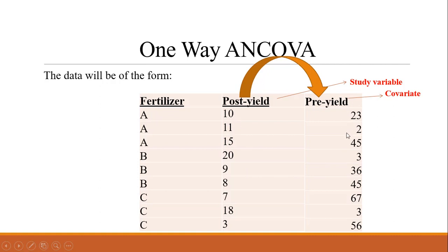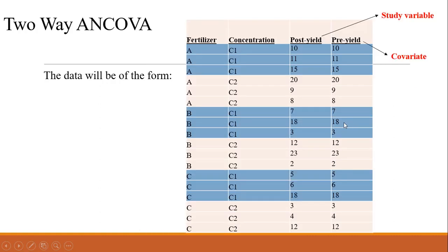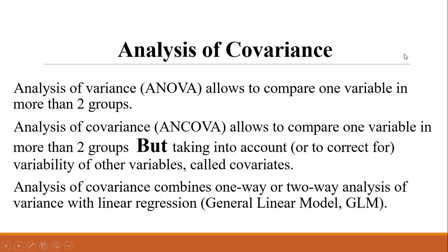For one-way ANCOVA, we again have one factor column plus two additional columns: one for the study variable and one for the covariate. In two-way ANCOVA, there are two factor columns plus columns for the study variable and covariate. Analysis of covariance allows comparison of one variable across more than two groups while correcting for variability in another variable called the covariate. ANCOVA combines one-way or two-way ANOVA with linear regression, forming the General Linear Model, or GLM.